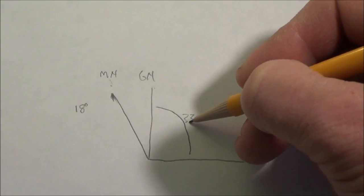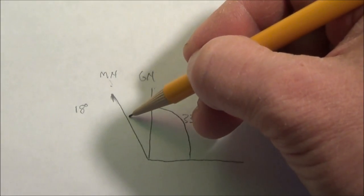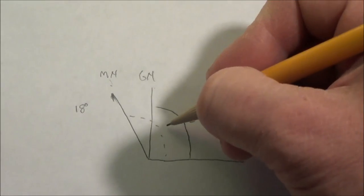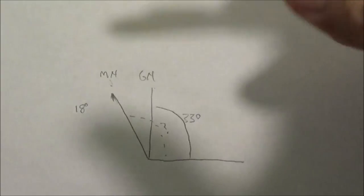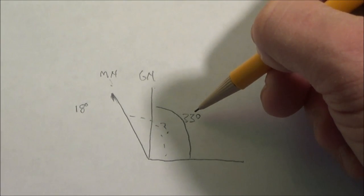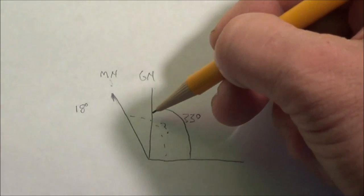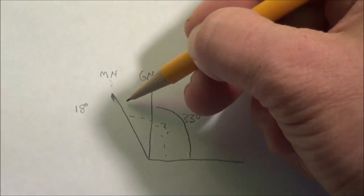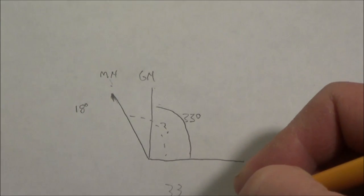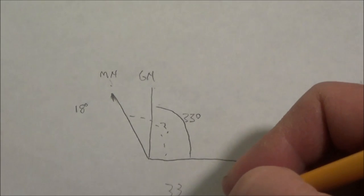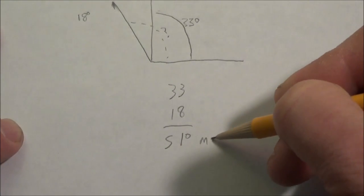We know the angle on the map was 33 degrees because we measured it ourselves. We know this is 33 degrees grid. What we don't know is what our magnetic reading is going to be — that's the question mark. Looking at the diagram, we can see 33 degrees on grid. In order to be magnetic, we're going to have to add: 33 plus 18 gives us 51 degrees. So that's 51 degrees magnetic.